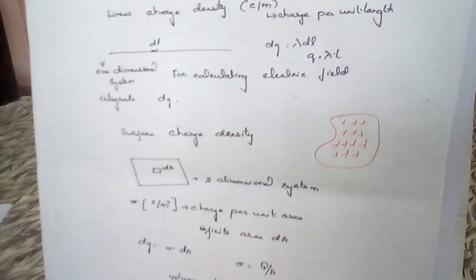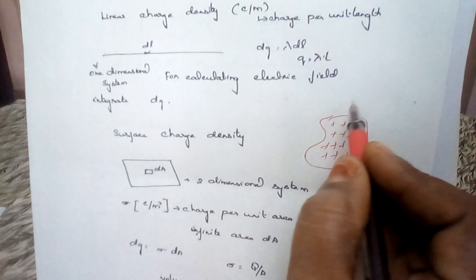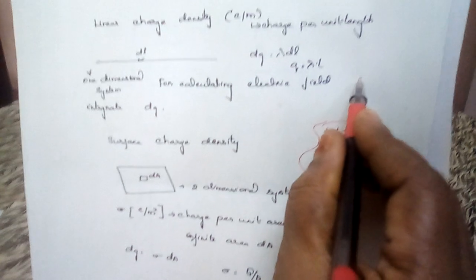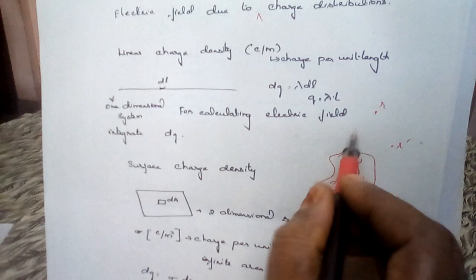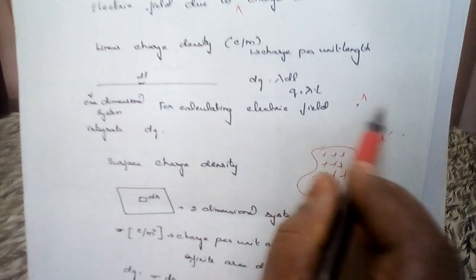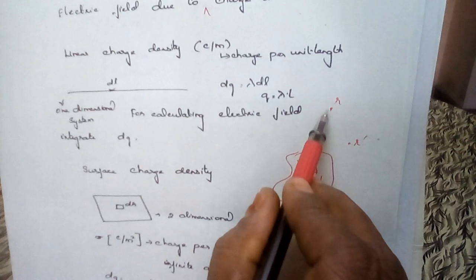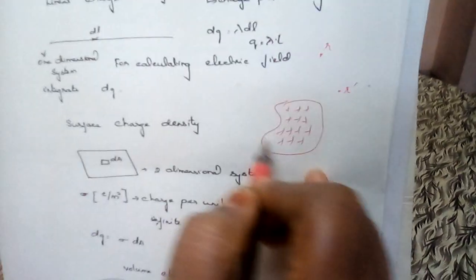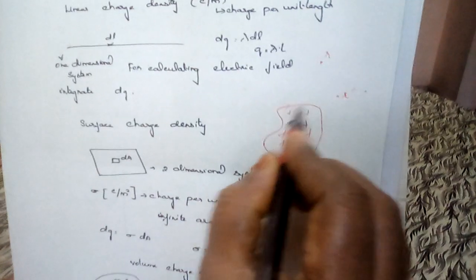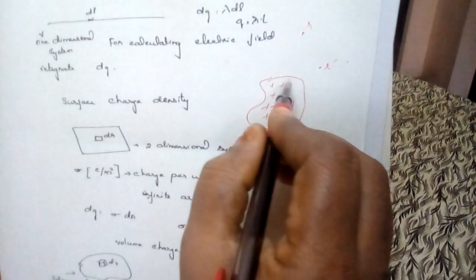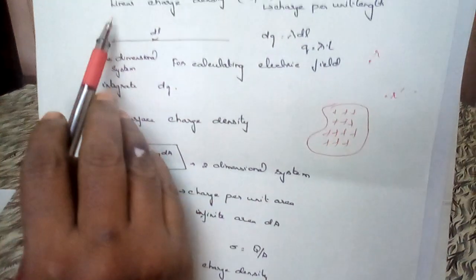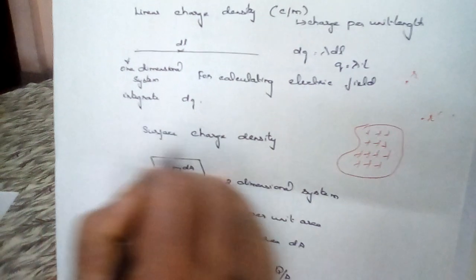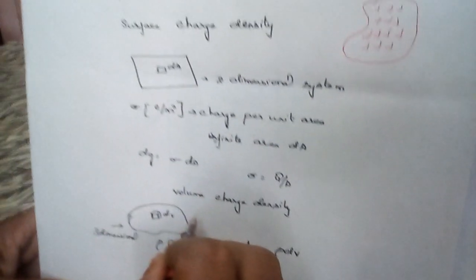If you consider Coulomb's law, we considered point charges at distance r or r'. In that case, charges are disposed at discrete positions in the field — it is not continuous, there is some distance in between. But in the case of continuous charge distribution, if there is a field, the point charges are continuously distributed. The continuous distribution charges are given in terms of linear charge density, surface charge density, and volume charge density.